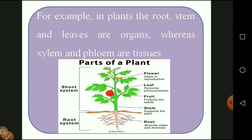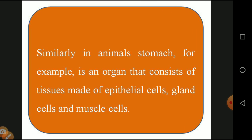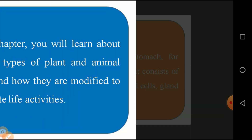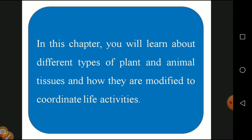Xylem and phloem cannot be seen with the naked eye; you need to make a cross section of stem or leaves to see the tissue. Similarly in animals, the stomach is an organ consisting of tissues made up of epithelial cells, gland cells, and muscle cells. Inside the stomach, numerous rough particles form epithelial cells that secrete juices via gland cells. In this chapter you will learn about different types of plant and animal tissues and how they coordinate life activities.